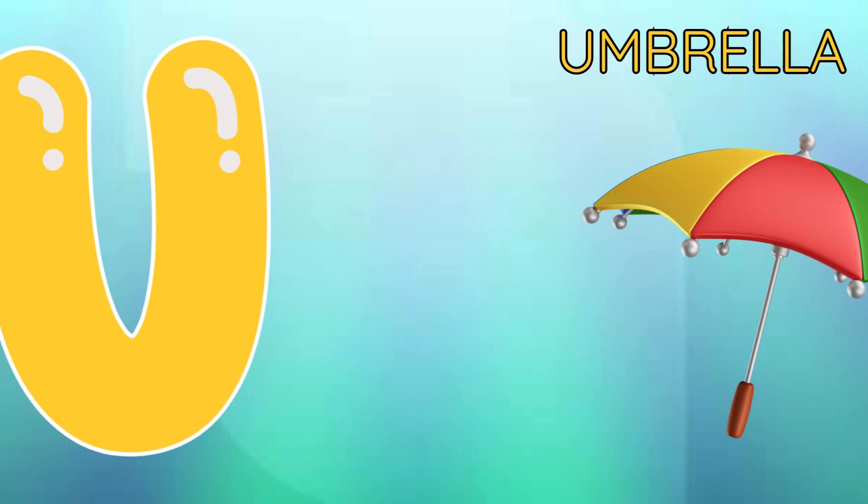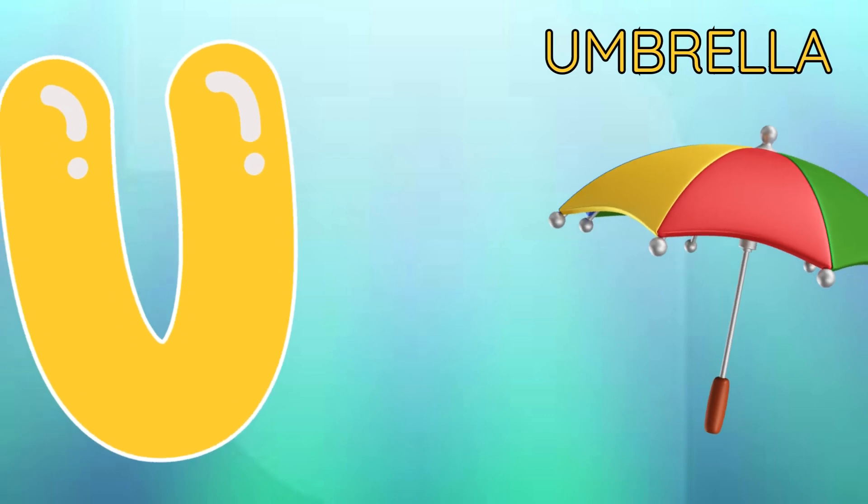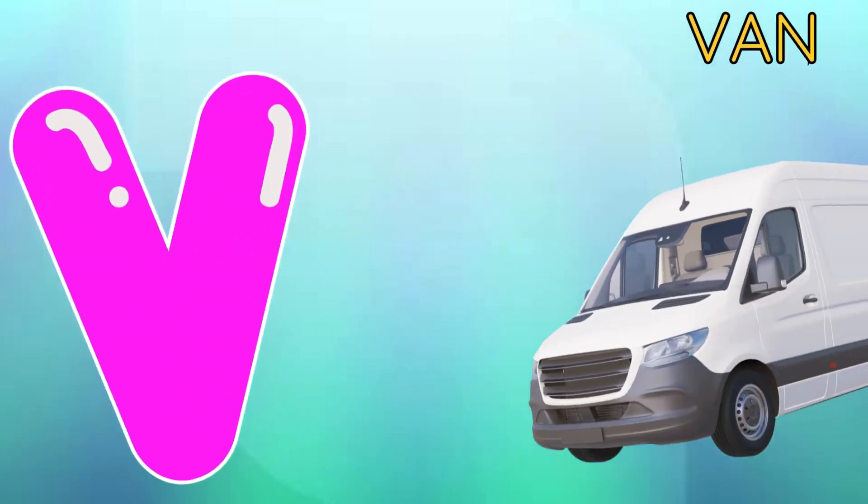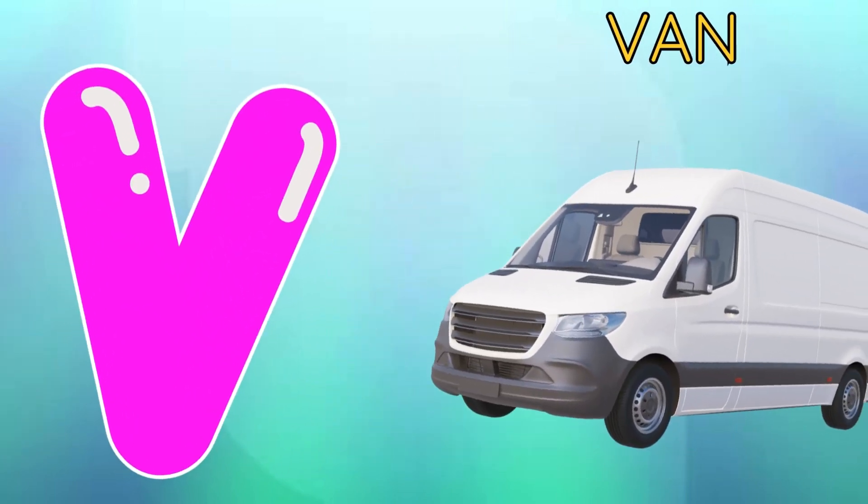U is for umbrella, a-a-umbrella. V is for van,